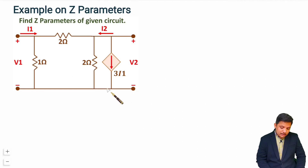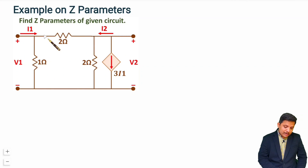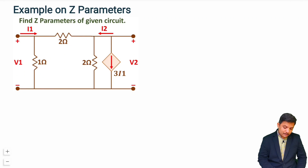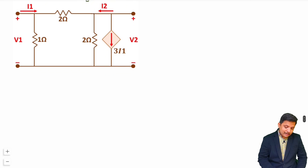You should understand this: whenever you have a simple pi network or T network, then by solving two equations we can directly have Z parameters. But if you don't have a simple pi or T network, then you will have to follow the basic process. I don't see this as a simple pi or T network, so I need to solve this circuit using the open-circuited parameter method, which gives Z parameters.